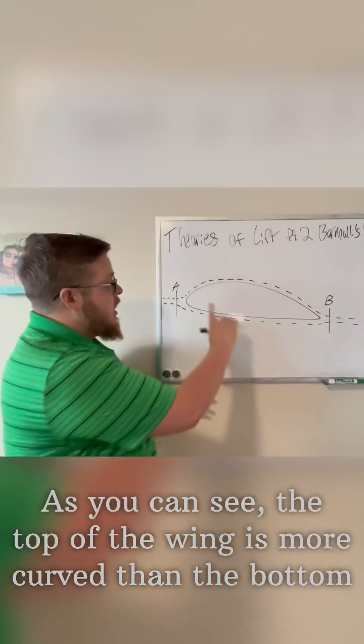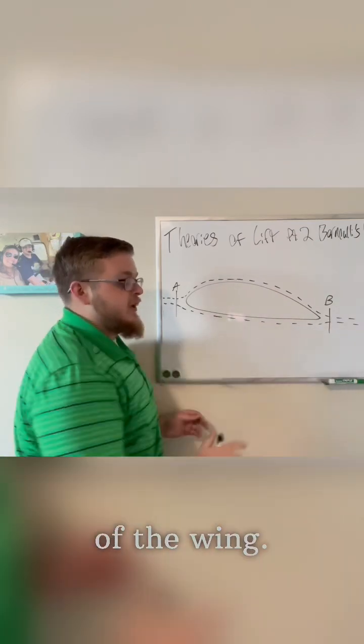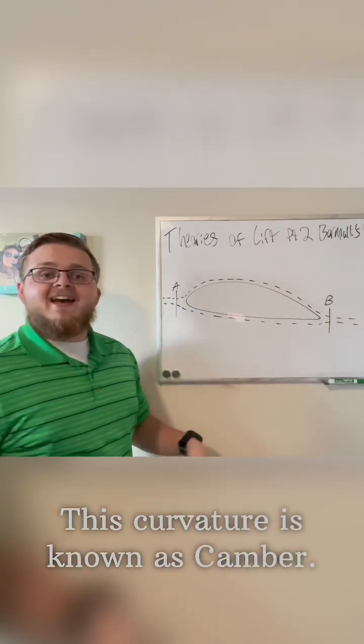As you can see, the top of the wing is more curved than the bottom of the wing. This curvature is known as camber.